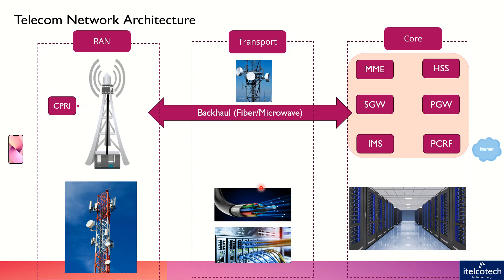Any information transmitting and receiving between the Radio Access Network and the core network is catered by the backhaul. Then we have the external network, which is the internet. For example, if a user wants to access google.com, it has to go to the external network — the external internet or data network — along with these three sub-networks in the telecom infrastructure.